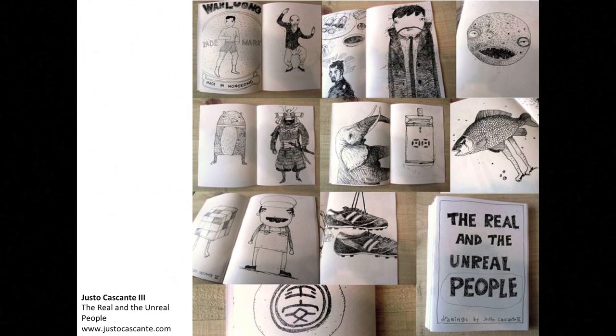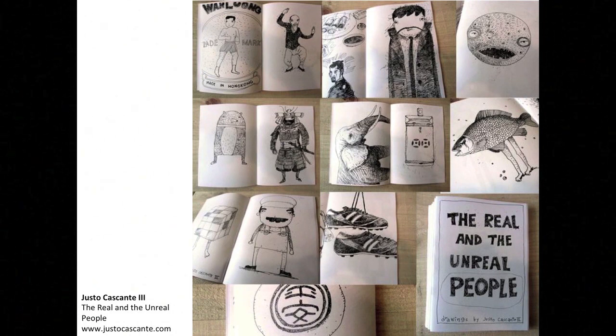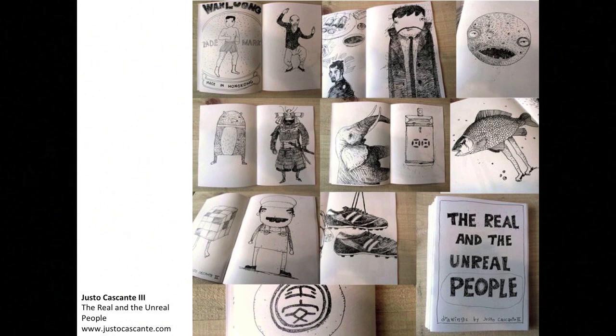This book called The Real and the Unreal People by Justo Cascante III is just a really great example of how putting your illustrations into a book can show off things that you might think of as just a one-off sketch or drawing. It really becomes a strong piece as a book. Plus the black and white ink drawings reproduce great as photocopies.